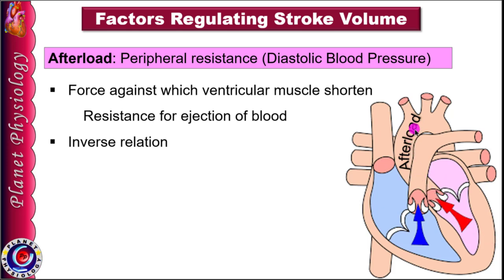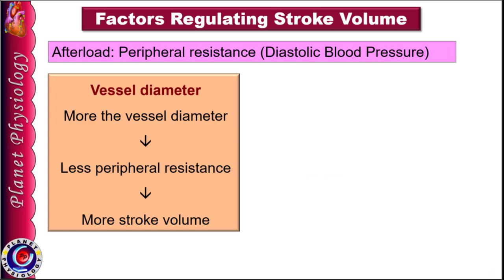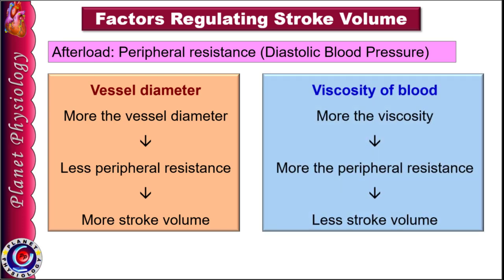Since afterload alters cardiac output without changing ventricular muscle fibre length, it is called homometric regulation, first described by scientist Anrep in 1974 and hence also referred to as the Anrep effect. Vessel diameter and viscosity of blood are the two major factors deciding afterload. More the arteriolar diameter, less is the peripheral resistance and more is the stroke volume. If blood viscosity is high, peripheral resistance is also high and stroke volume is reduced.